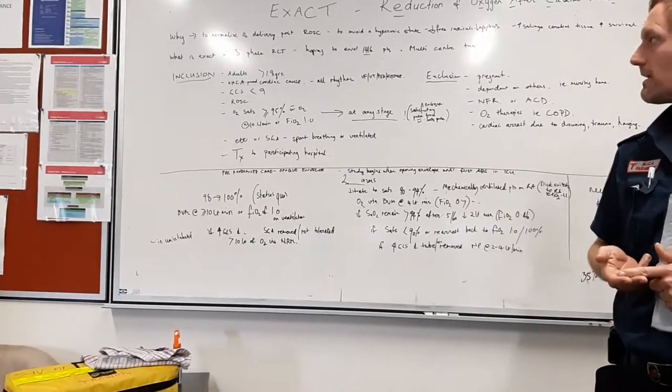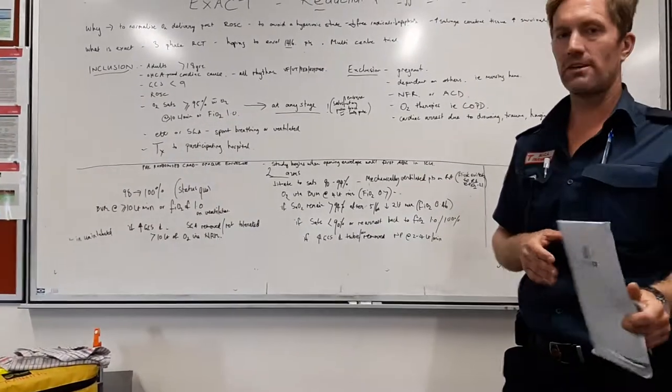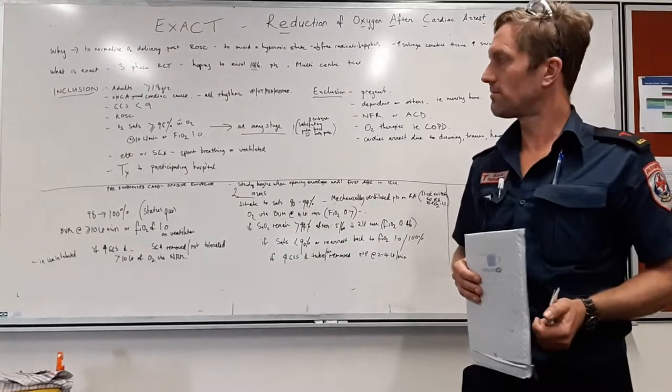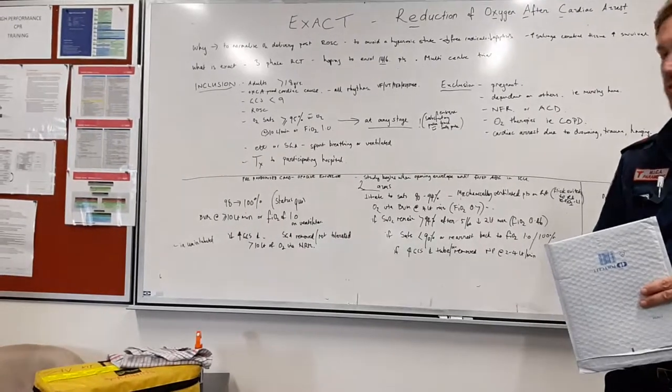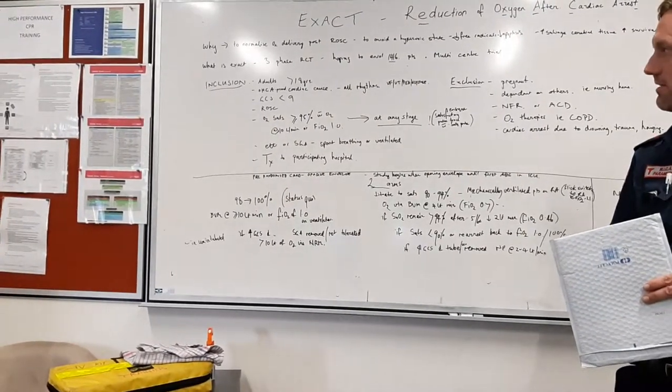It can be asystole, PEA, but predominantly VF, VT. GCS for us would be less than 9, so someone we'd be thinking about intubating via RSI or if not intubated, pre-arrest.